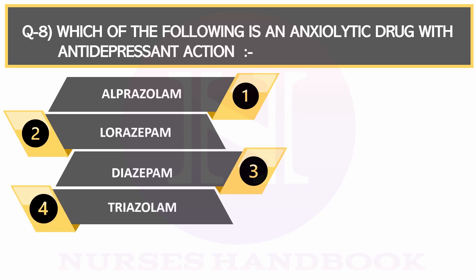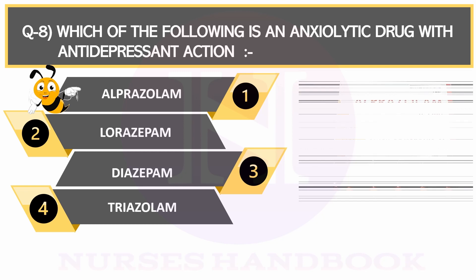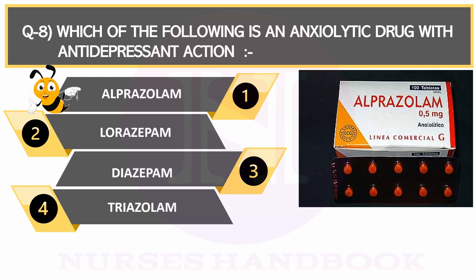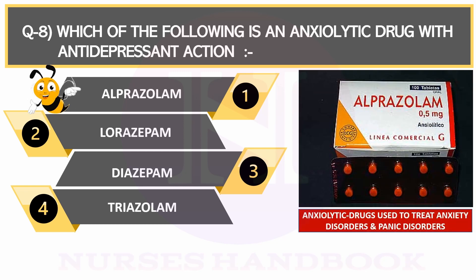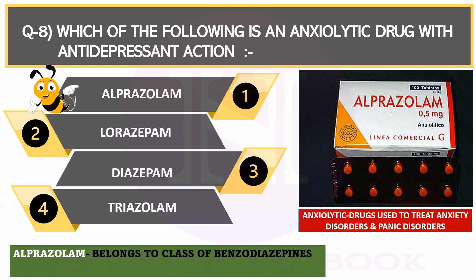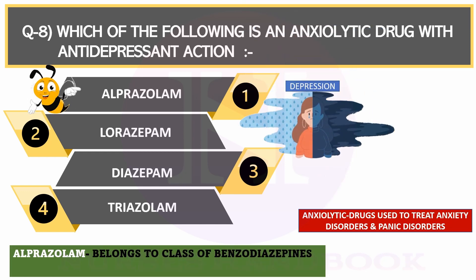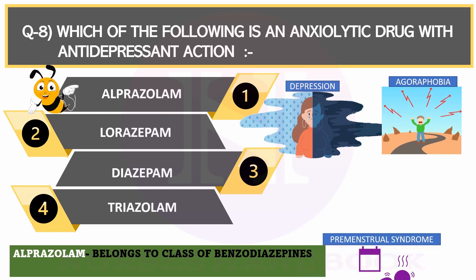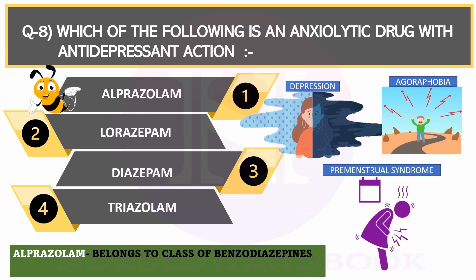The correct answer is Alprazolam. Anxiolytic drugs are used to treat anxiety disorders and panic disorders. Alprazolam is in a class of benzodiazepines, and it is also used to treat depression, fear of unfamiliar places — that is agoraphobia — and premenstrual syndrome.